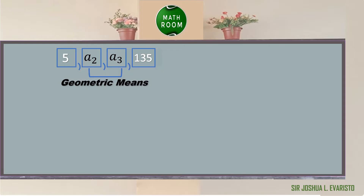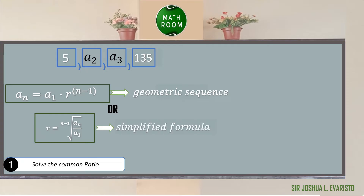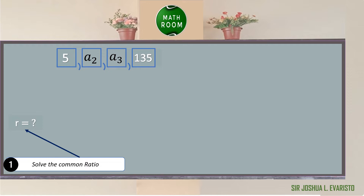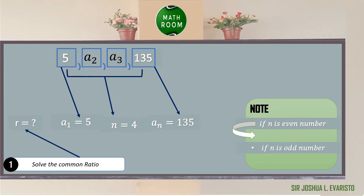To determine the geometric means, we need to solve the common ratio first. We can use the geometric sequence formula: a sub n equals a sub 1 times r raised to (n minus 1), or the simplified formula: r equals the (n minus 1) root of a sub n over a sub 1. We also need to consider whether n is even or odd. If n is even, we have one value of the common ratio. If n is odd, we have two values of the common ratio.